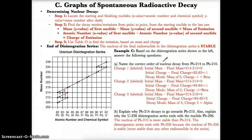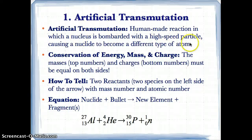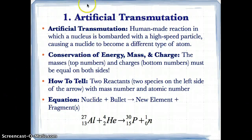Now we're going to go on to the main lesson. If you have any questions about these first three slides, please email me. Let's move on to artificial transmutation. Artificial transmutation is a human-made reaction where a nucleus of an isotope is bombarded or hit with a high-speed particle. Unlike natural transmutation, you have two reactants: the nuclide and the high-speed particle.